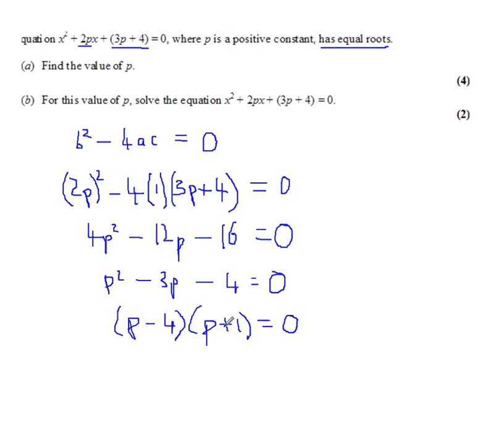Now, that means that p is 4 or p is minus 1. Here, p is a positive constant. The clue is in the question. It's a positive number. So the solution is p equals 4, not minus 1. So that's part A done.